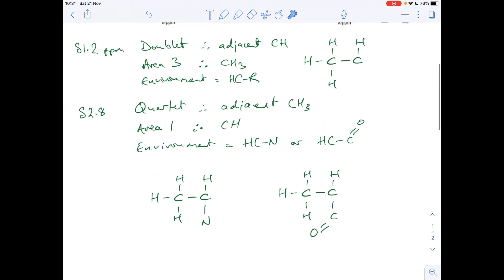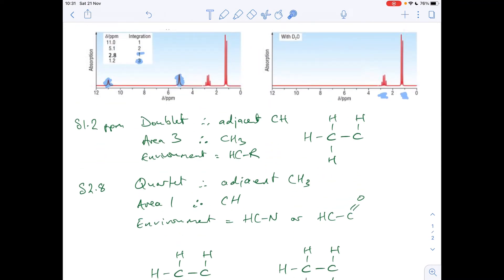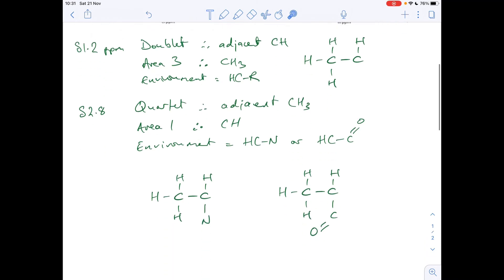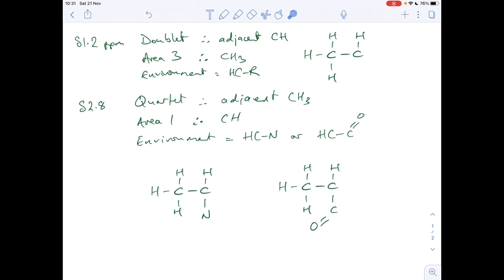So we'll just go to the peaks that have disappeared now. So we'll go with this one first, the 5.1. So we've got an area of 2, an integration value of 2. So what that means is there are two protons in this environment. Now we know there's a nitrogen in the molecule. And the obvious or the logical thing to do is to say this group here, that could be an NH2 group, which is consistent with what we've already said. So you'll notice I've added the molecular formula now of the compound.